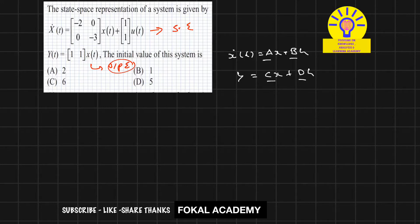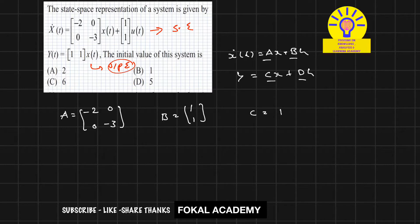From the given problem, the A matrix is [-2, 0; 0, -3] and the B matrix (the input matrix) is [1; 1]. The output matrix C is equal to [1, 1], and the transmission matrix D is given as 0.